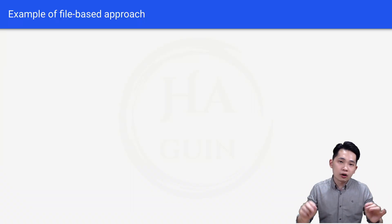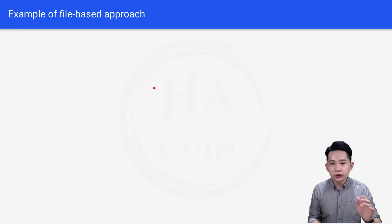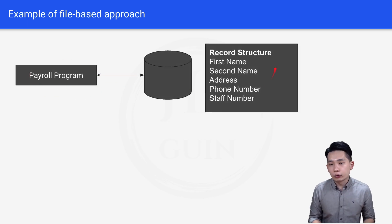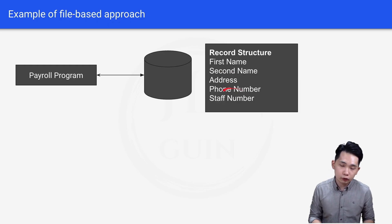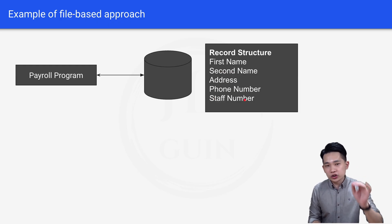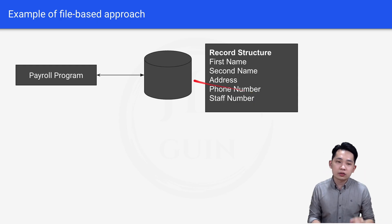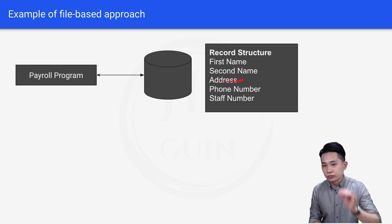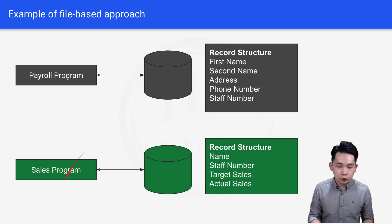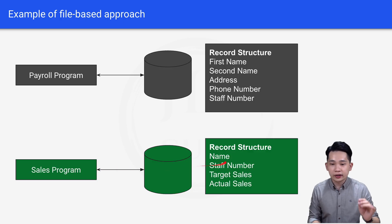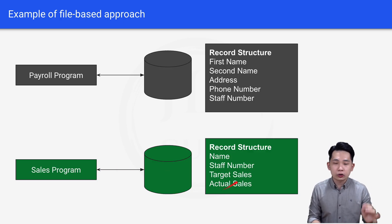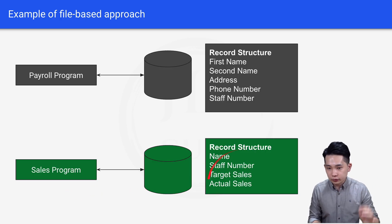Now let's look at an example of the file-based approach. Here we have a payroll program with a record structure containing first name, second name, address, phone number, and staff number. All this information is stored in one file and the payroll program reads from this file. At the bottom we have a sales program which stores information like name, staff number, target sales, and actual sales — also stored in a separate file which the sales program reads from.